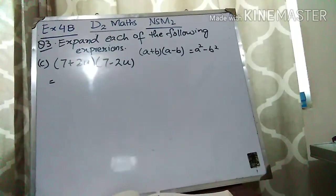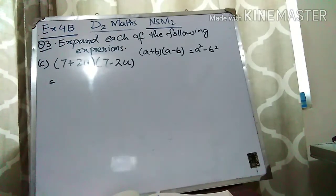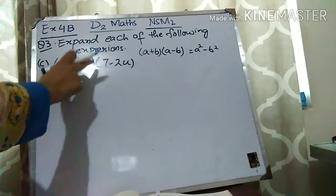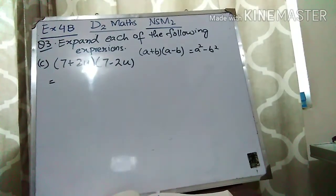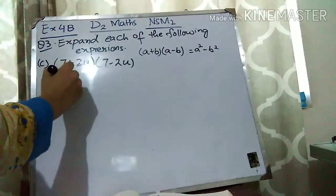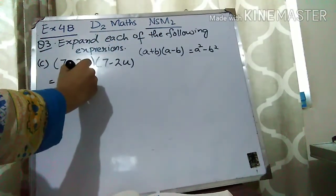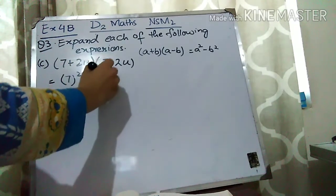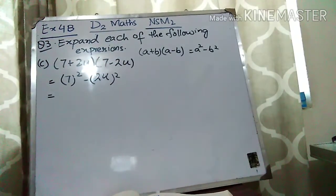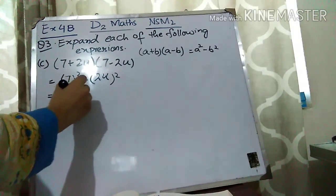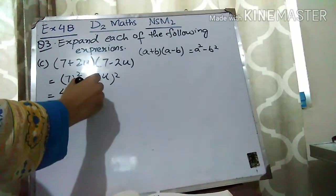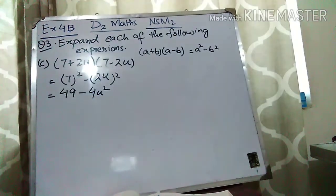Part C is (7 plus 2U)(7 minus 2U), which is A plus B, A minus B. A is 7 and B is 2U. So the formula gives A square minus B square: 7 square minus (2U) square. 7 times 7 is 49. (2U) square means 2 square times U square — 2 twos are 4 — so the answer is 49 minus 4U square.